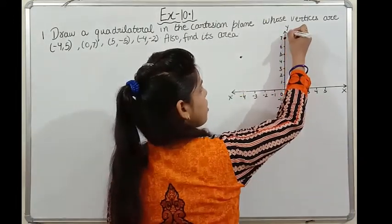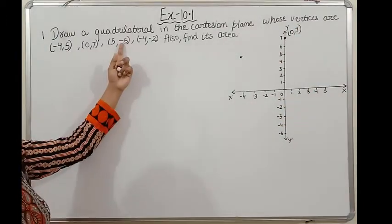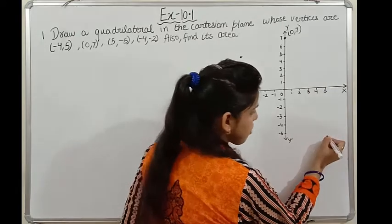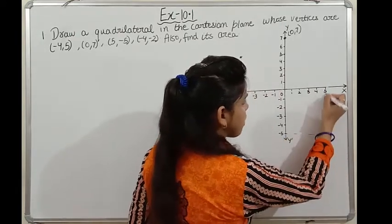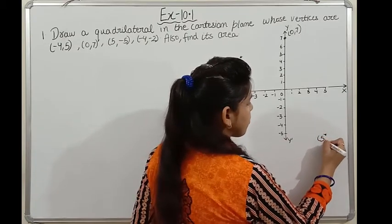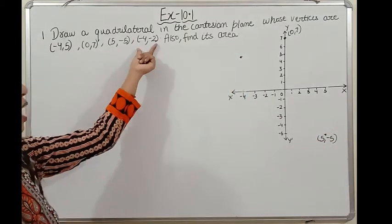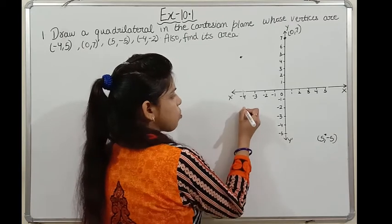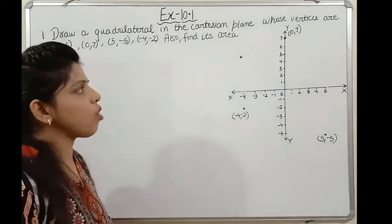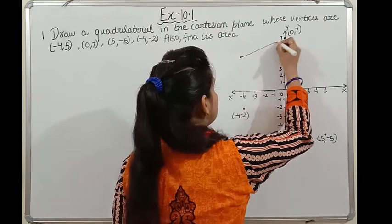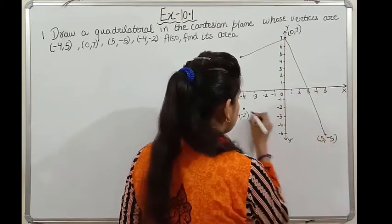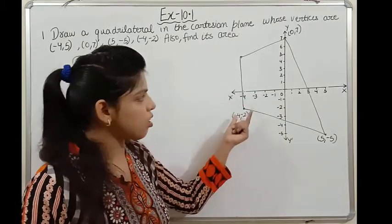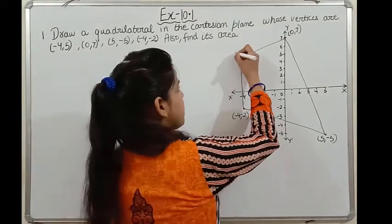The next point is (5, -5) — x is 5, y is -5, plotted in the fourth quadrant. The last point is (-4, -2) — x is -4, y is -2. Now join all four points using a scale to form the quadrilateral. I'm using a rough line since I don't have a scale, but you should use one. Let's name the points A, B, C, D.